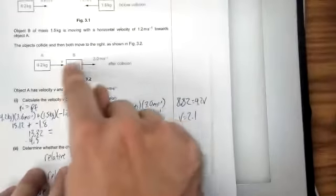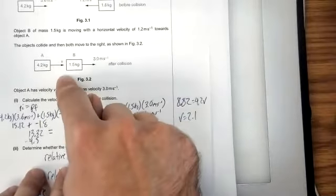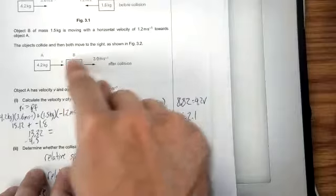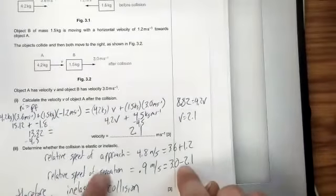After the collision, they travel in the same direction. Same subtract. When objects travel in the same direction, subtract their speeds to calculate the relative speed. So I subtract here to get the relative speed of separation.